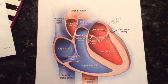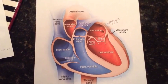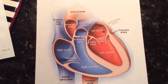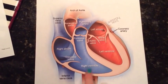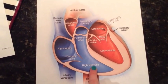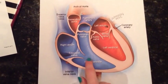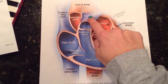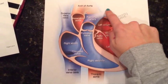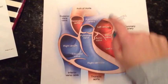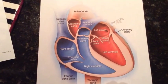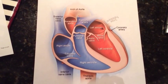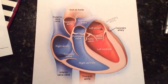The ventricles of the heart function to pump blood to the entire body. The right ventricle receives blood from the right atrium and pumps it to the main pulmonary artery. The main pulmonary artery extends from the right ventricle and branches into left and right pulmonary arteries, which extend to the lungs.